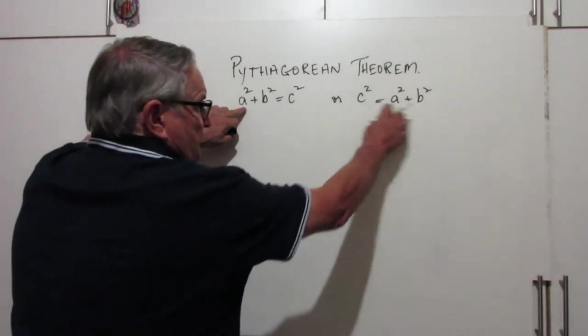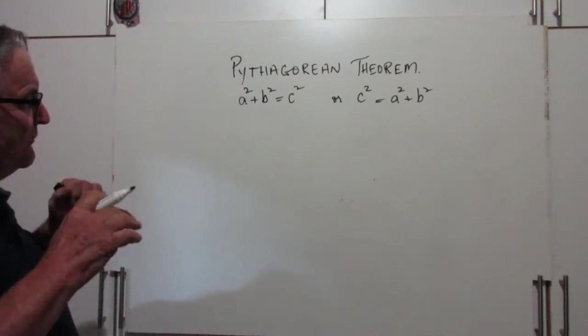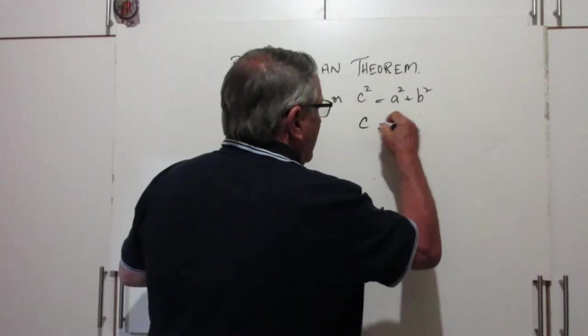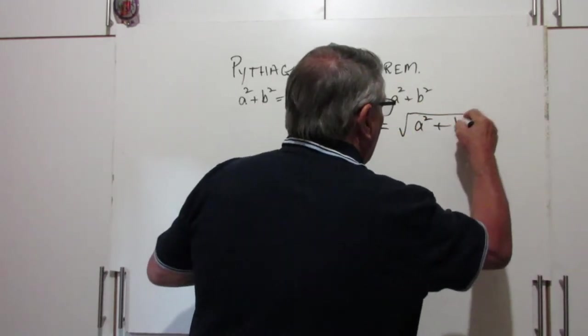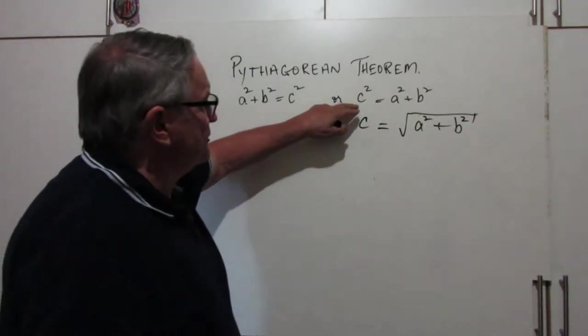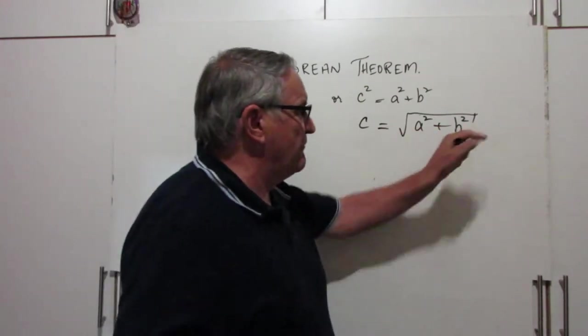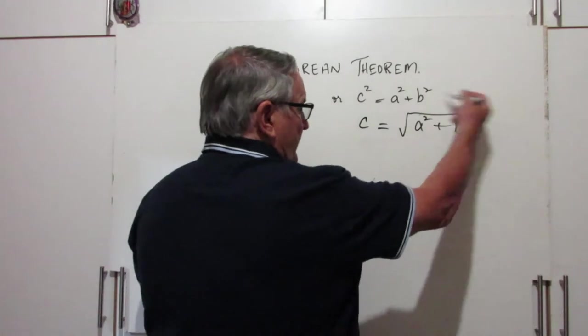Now when I wrote Pythagorean Theorem in these formats, I did so deliberately because we can get a bit smarter and write it in a process format like this, or a procedural format if you like. c² equals a² plus b², so c is equal to the square root of a² plus b². And we can put that straight into a calculator.